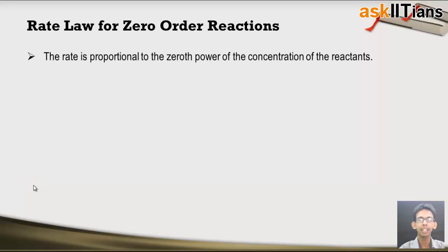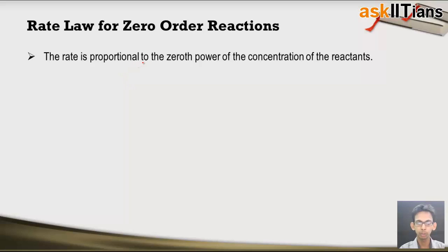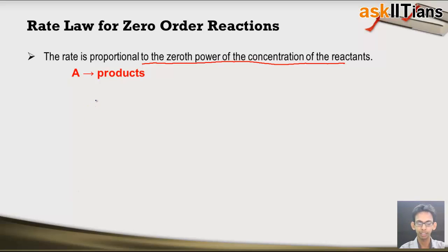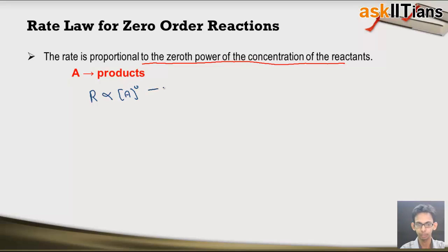The rate of a zero order reaction is proportional to the zeroth power of the concentration of the reactants. Let's understand this with a hypothetical example in which reactant A is reacting to form products. Being this reaction a zero order reaction, its rate must be directly proportional to the zeroth power of the reactant as from the definition.